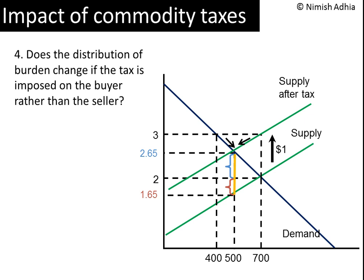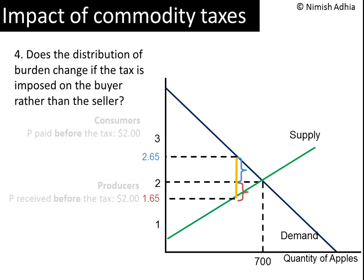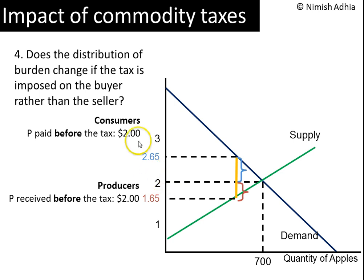To demonstrate this, I am going to clean up the diagram from the previous video that had demonstrated the effect of tax collected from sellers. The only thing I am going to leave is the tax wedge from that analysis and the prices corresponding to the top end and bottom end of the tax wedge. I will also note down the equilibrium price before the tax was imposed. Now let's begin our analysis of the impact of the $1 tax that is collected from buyers rather than sellers.